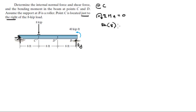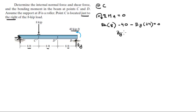Minus the 40 kip-foot moment at the very end of the assembly, minus the moment created by BY, which is BY times 24 (because 8 times 3 is 24), and all of that equals 0. Solving for BY, we get BY equals 1 kip.